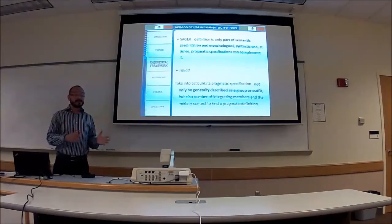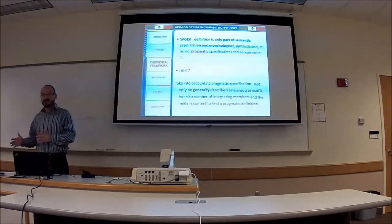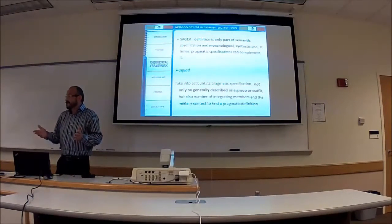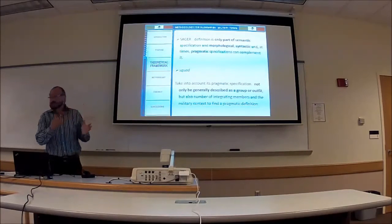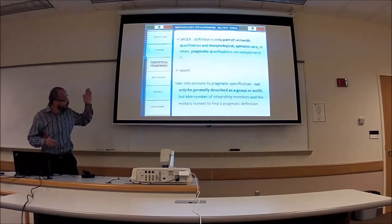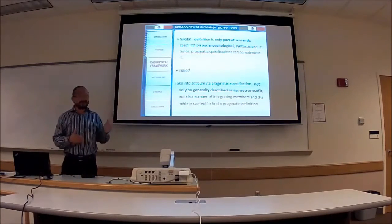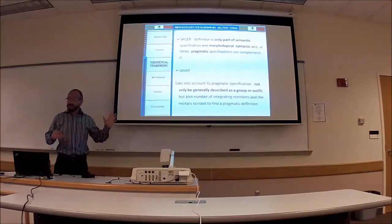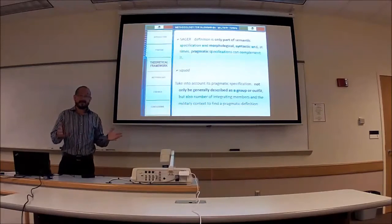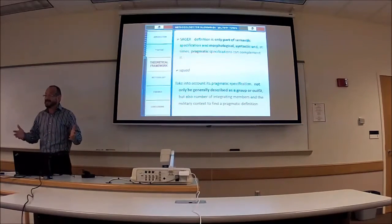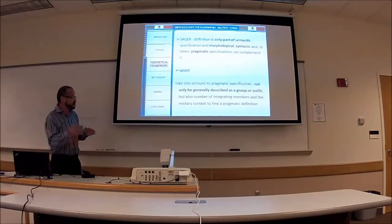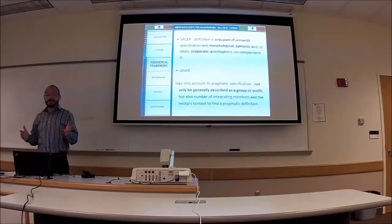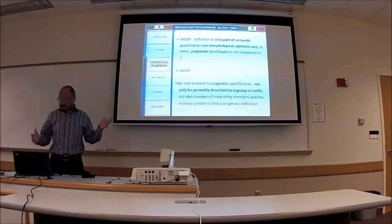This work is based on the knowledge of some experts, especially in terminology. And comes Sager and says that if you want a definition, you don't just have to take into account the semantic specification. You have to rely on method, morphological, syntactic and pragmatic specification if you want a robust definition. Let's say SWAD. SWAD is very easy to describe. You can say it's a group of people, a group of soldiers. But that doesn't tell you much. But what about if you include the number of members and the context? So that would be really a pragmatic definition now.